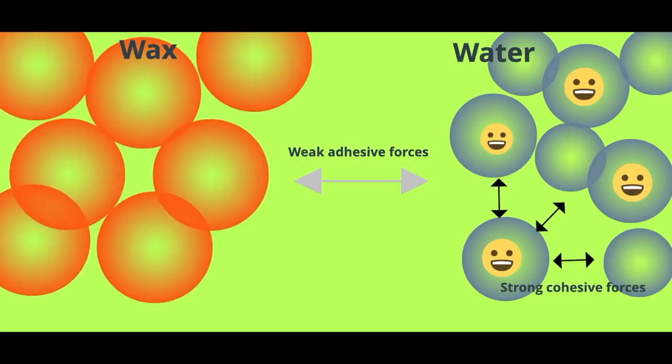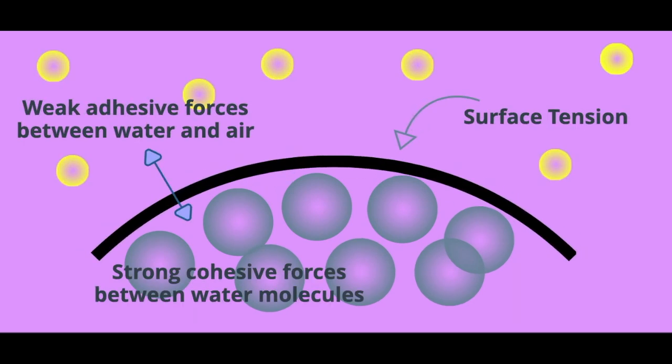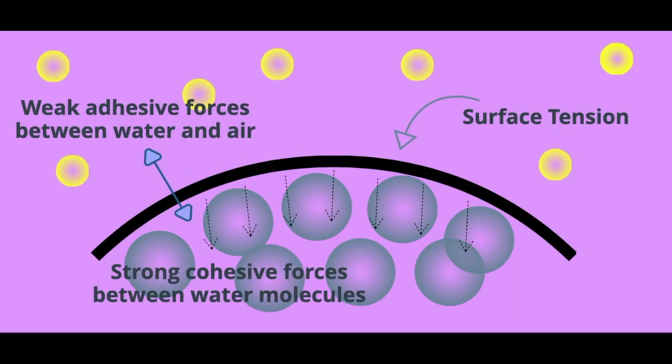The strong cohesive forces between water molecules create surface tension. Water and air adhere less than water and the solid lotus leaf. The nano structure of the lotus leaf also reduces the adhesive force between water and the leaf.